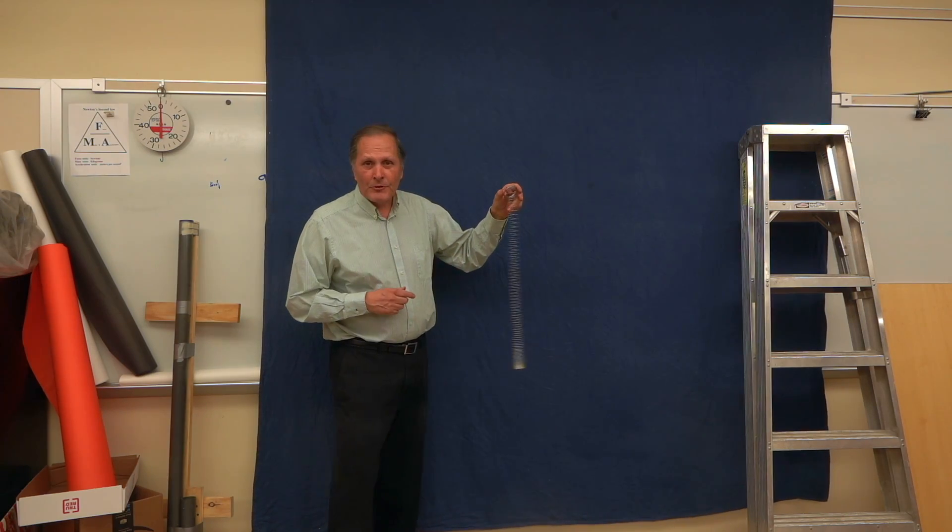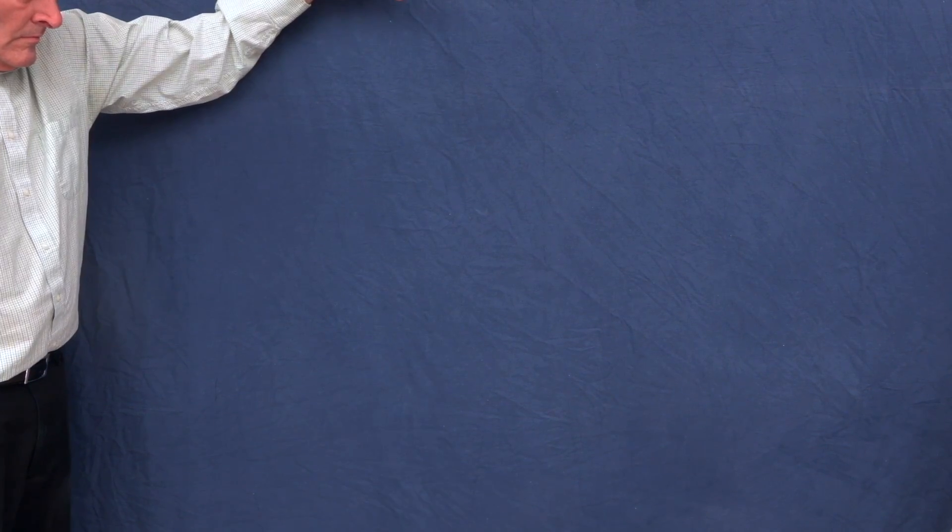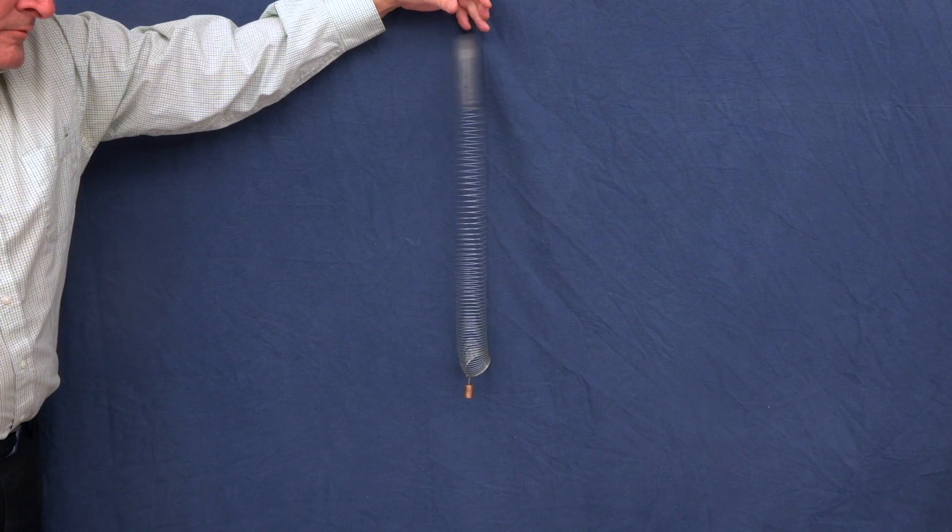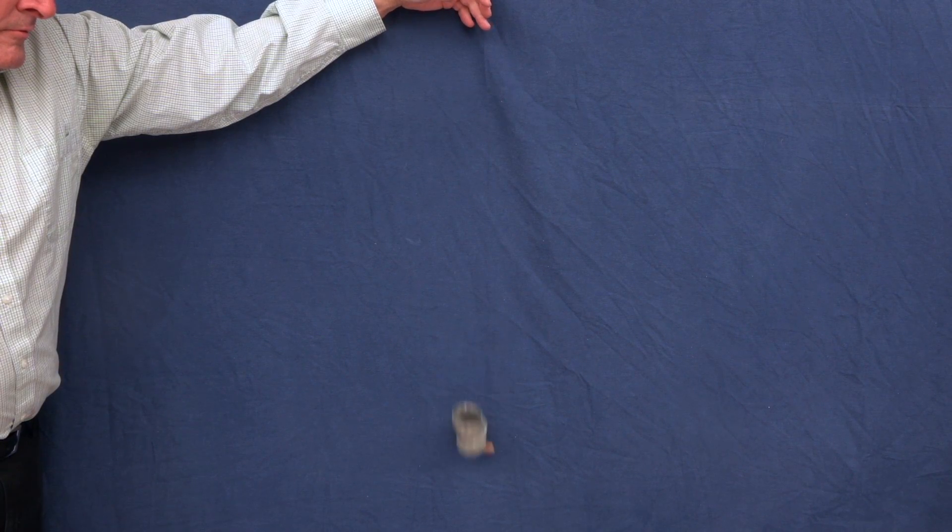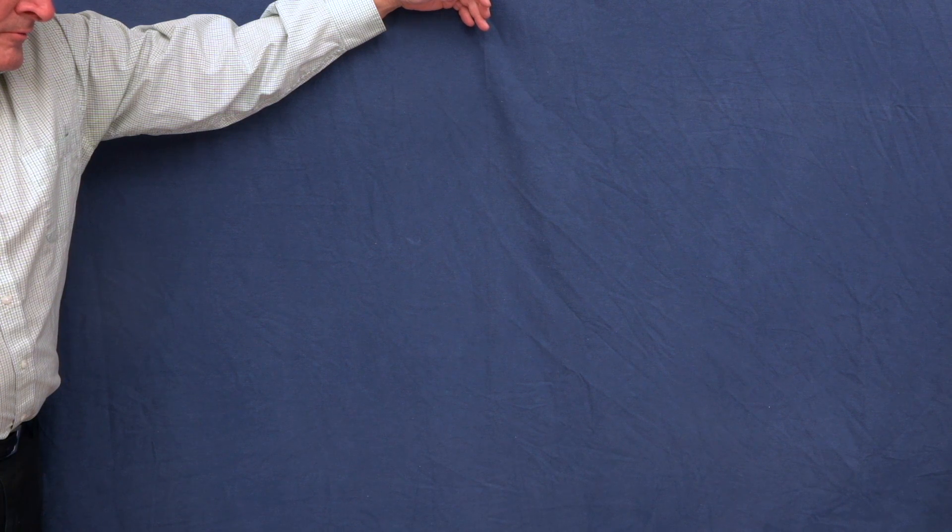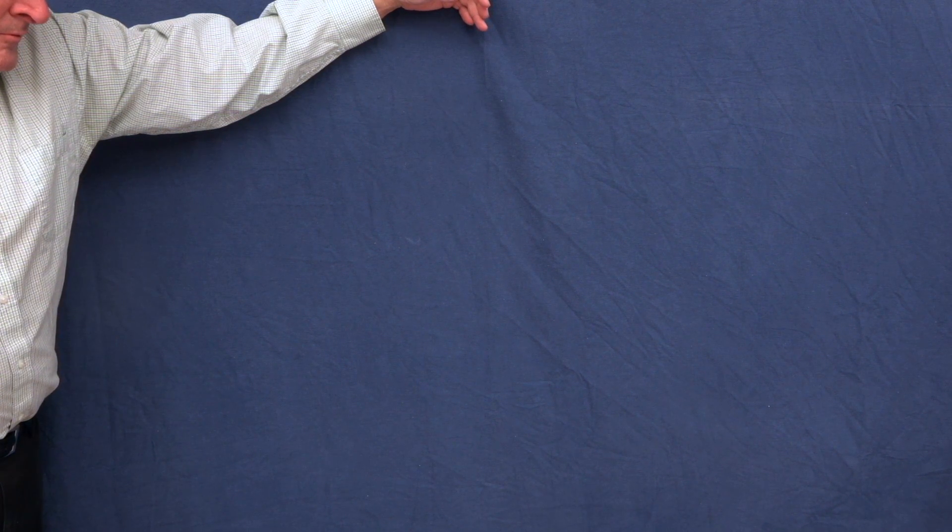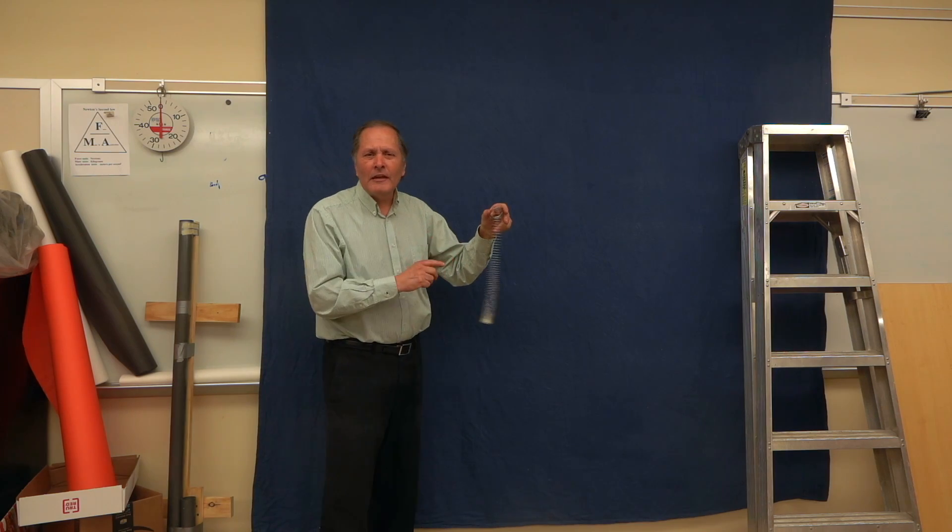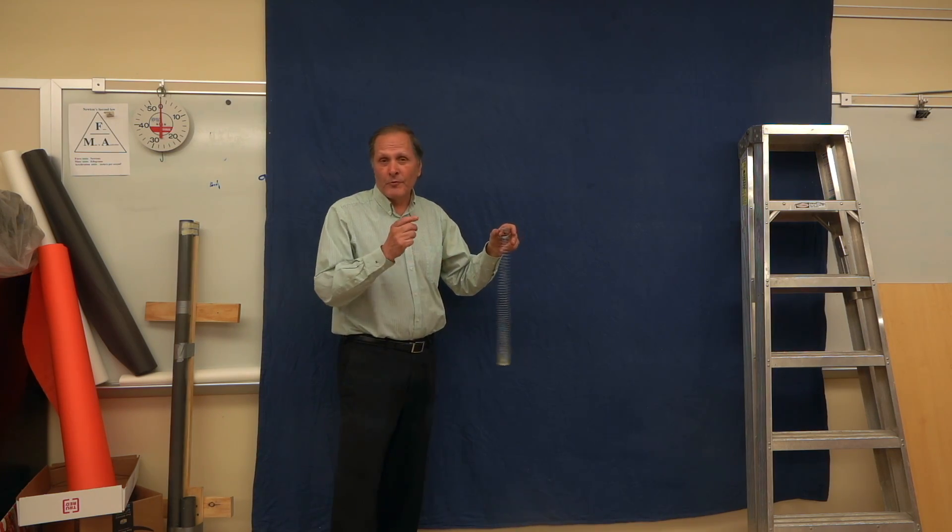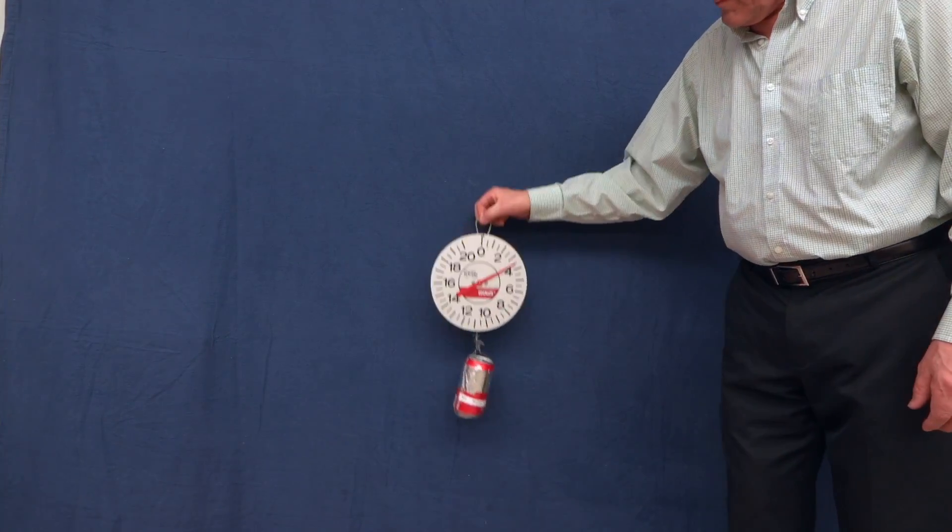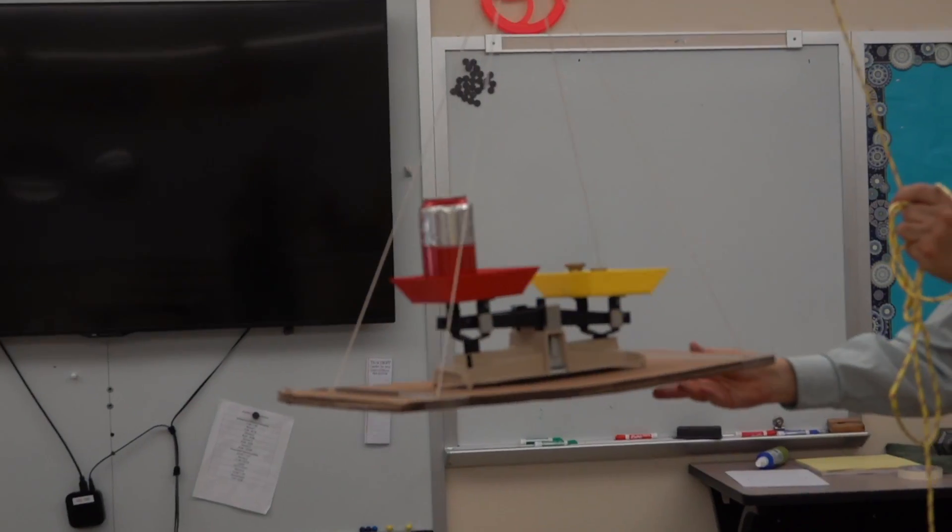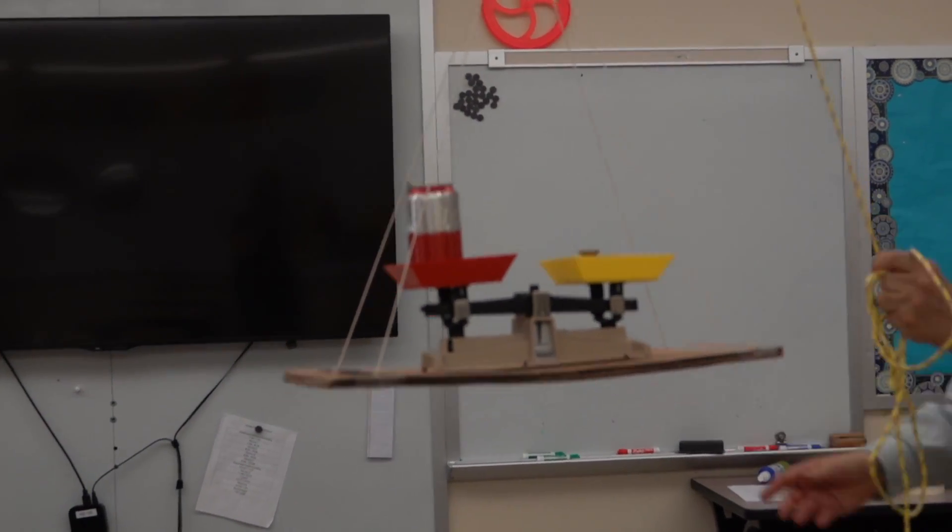Now something else to observe in freefall is a Slinky. We'll be taking a closer look at Slinkys and other springs as they fall in a future video. We'll also take a look at the behavior of spring scales versus pan balances under accelerated motion.